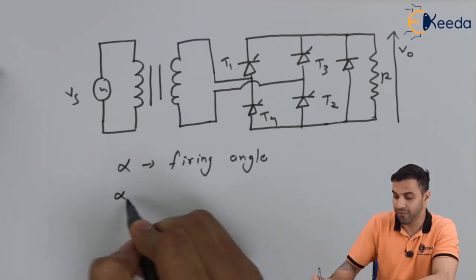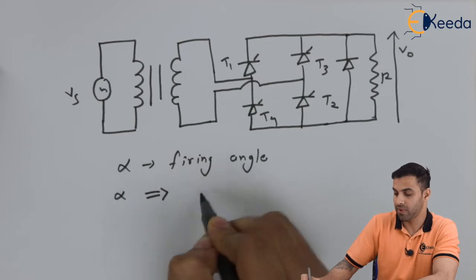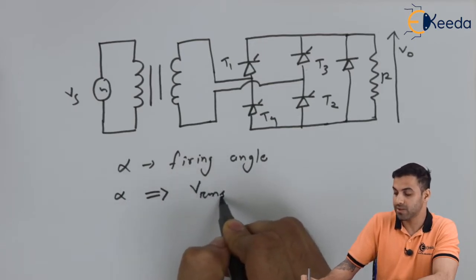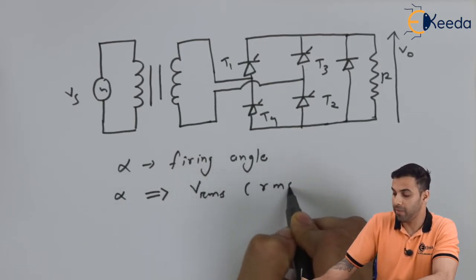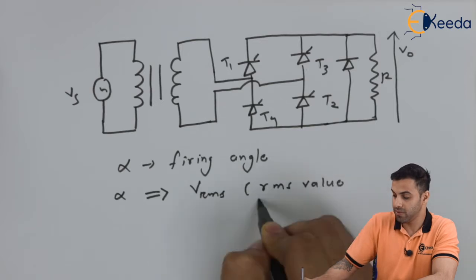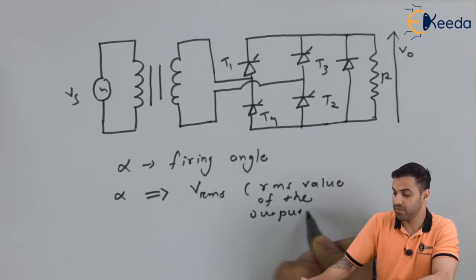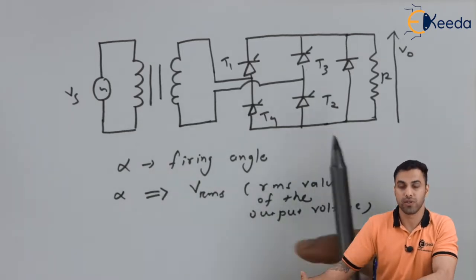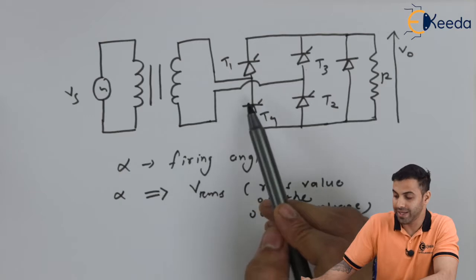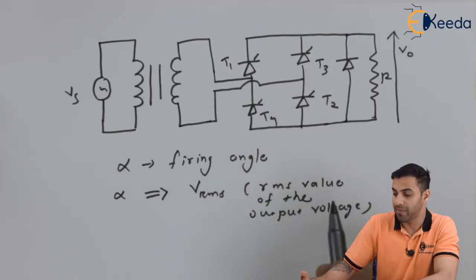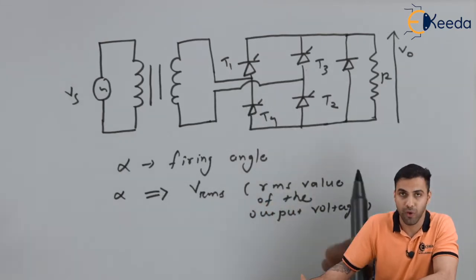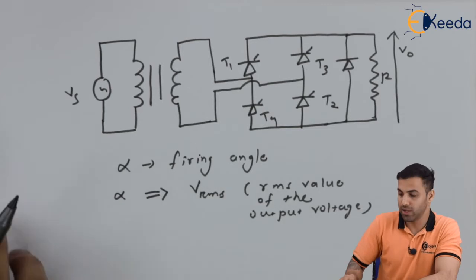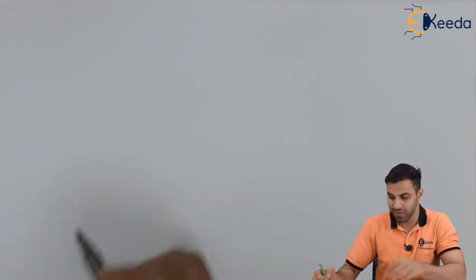So by controlling alpha, V_rms, which is the RMS value output voltage, can be controlled. So friends, here in this circuit I'm converting an AC to a DC voltage and I'm controlling my output voltage by controlling the firing angle. So this can also be done through a half wave rectification method.